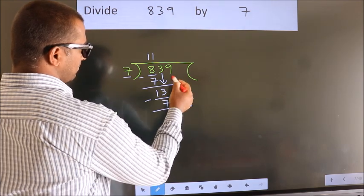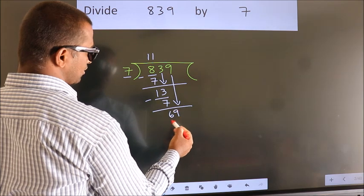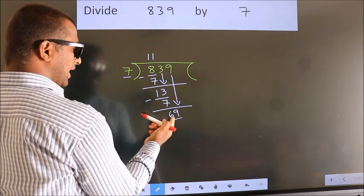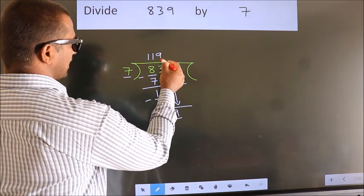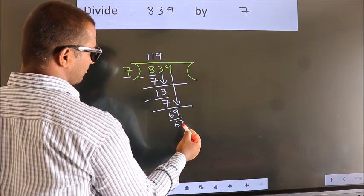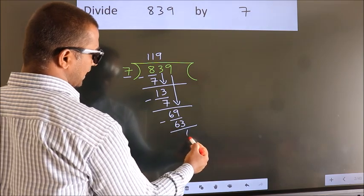After this, bring down the beside number. So 9 down. So 69. A number close to 69 in 7 table is 7 nines 63. Now we subtract. We get 6.